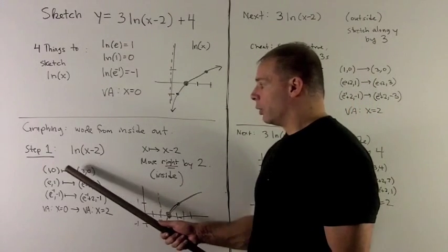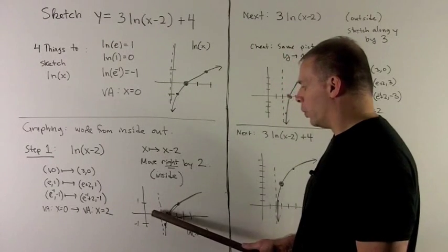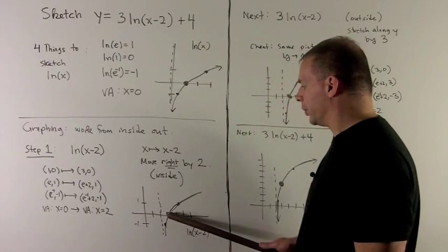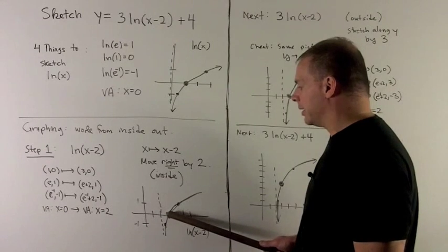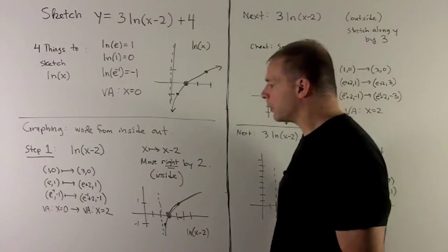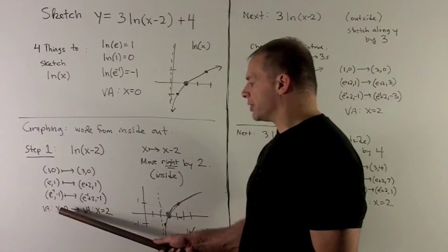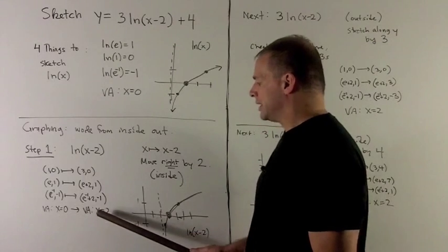Take a look. 1, 0 goes to 3, 0, so that's going to be 1, 0 is here. I go over by 2, and my big black dot moves over to the point 3, 0. What else moves? Well, our vertical asymptote is going to go from x equals 0 to x equals 2.